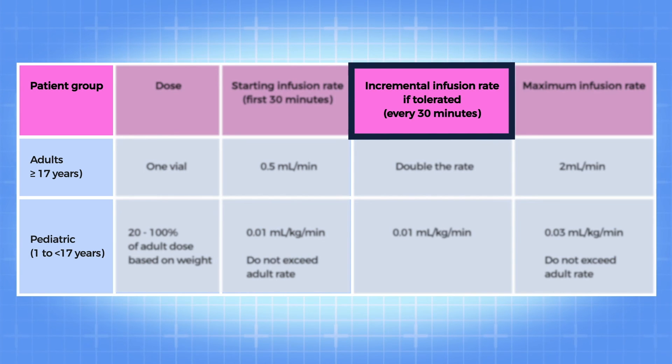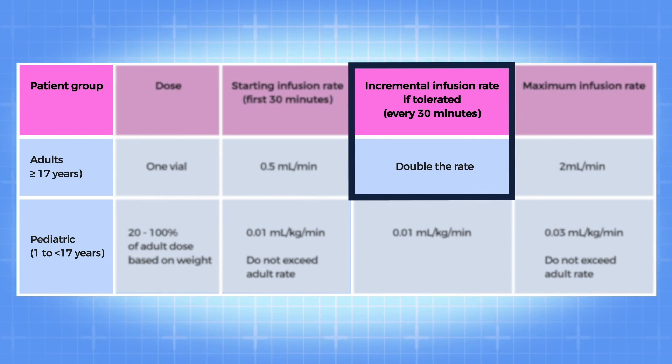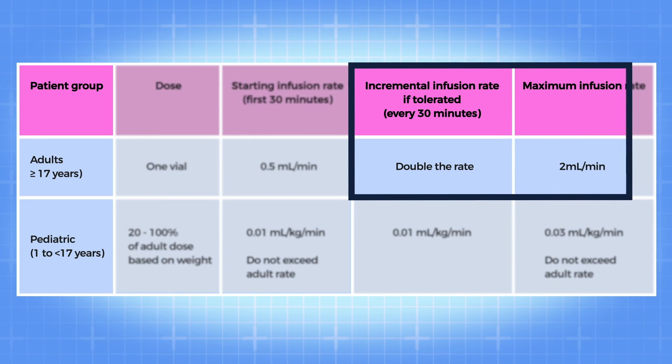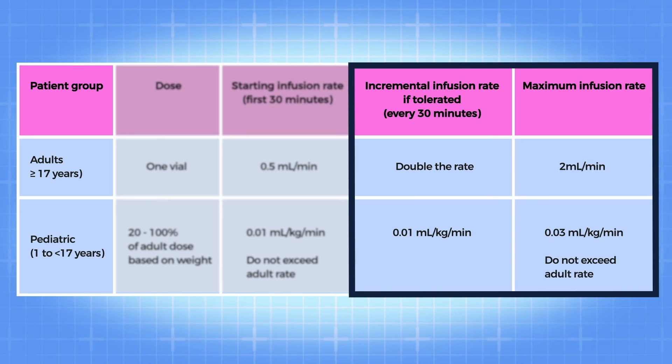If the infusion is well tolerated, you may increase the infusion rate. For adults, you may double the rate every 30 minutes to a maximum of 2 milliliters per minute. For children, you may increase the rate by 0.01 milliliters per kilogram per minute every 30 minutes to a maximum of 0.03 milliliters per kilogram per minute.